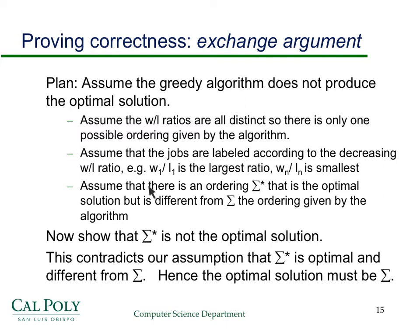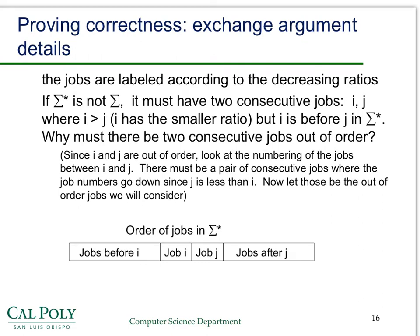The proof is going to use a contradiction. We assume there's an ordering σ* that is optimal but different from the ordering given by the algorithm — the ordering where jobs are serviced 1, 2, 3 up to n. Then we're going to show that σ* is not actually optimal by exhibiting a different ordering that is better. That contradicts our assumption that σ* is optimal, and hence the optimal solution must be the greedy ratio ordering.